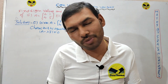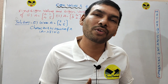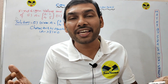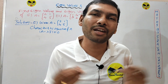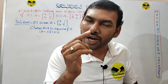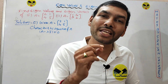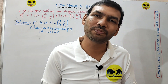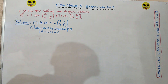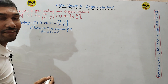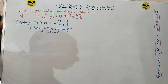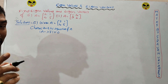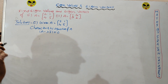In this video, we will show you how to find eigenvalues and eigenvectors. The first problem matrix is [2, 1; 4, 5]. First, we find the characteristic equation.